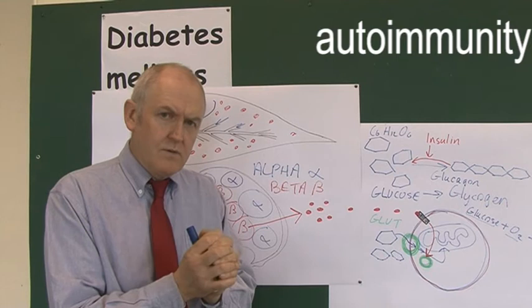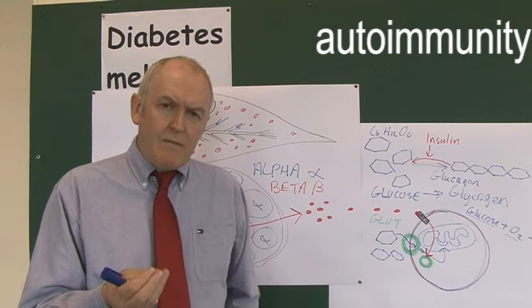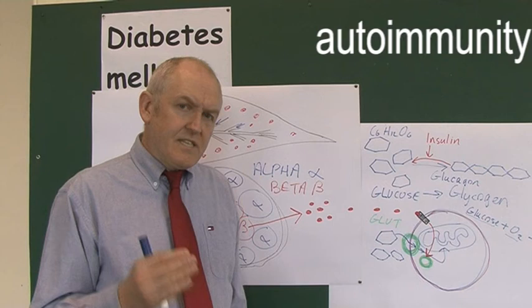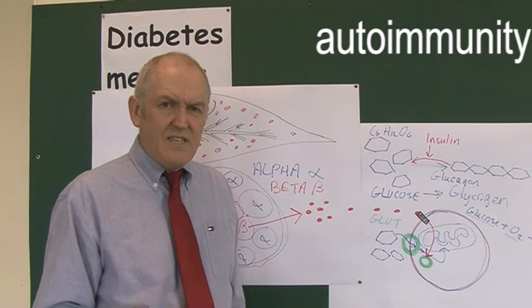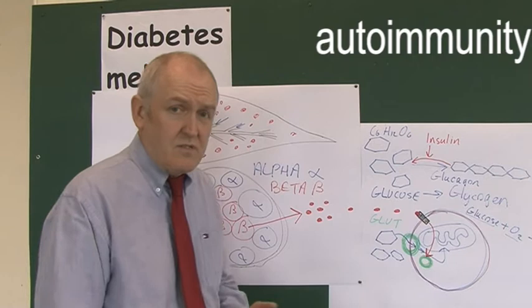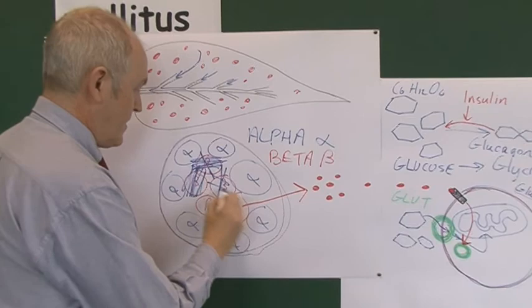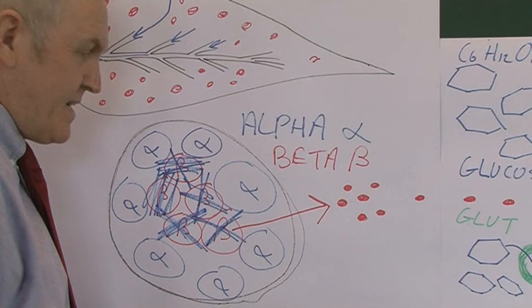The immune system is supposed to destroy bacteria and viruses — that's good. It's not supposed to destroy its own tissues, but sometimes the immune system makes a mistake and it seems to think that its own body tissues are bacteria or viruses and it destroys them. It does a very good job of it — it's a tragic mistake, it's death by friendly fire. It's pathological, of course — it's not supposed to happen.